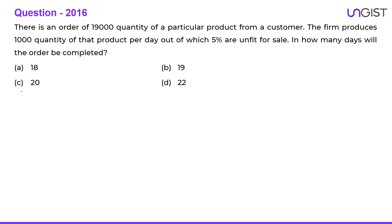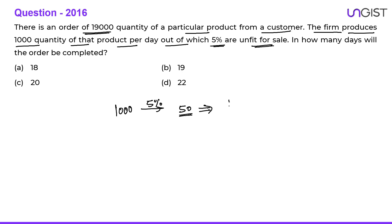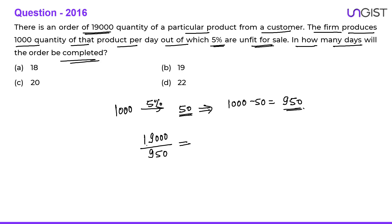Next question is from 2016: there is an order of 19,000 quantity of a particular product from a customer. The firm produces 1,000 quantity of that product per day, out of which 5 percent are unfit for sale. 5 percent of 1,000 is 50, so only 950 are fit for sale per day. The question is: in how many days will the order be completed? So 19,000 divided by 950 — 95 into 2 is 190, so this is 20. In 20 days the order will be completed.